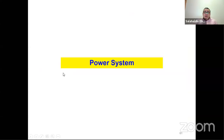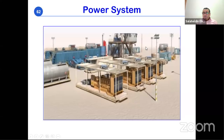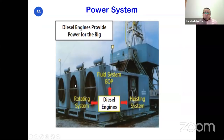The power system consists of diesel generators positioned alongside the rig. Since drilling operations occur offshore or in remote desert locations where grid electricity is unavailable, these generators supply electricity to the hoisting system, rotating system, and circulating system — the three primary power-consuming systems on a drilling rig.